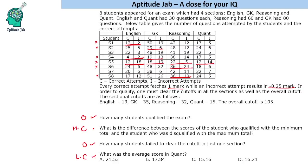In Quant, the cutoff is 15. One person will not clear the cutoff in Quant. Looking at the rest, these students are quite strong in Quant — except one, all have cleared the Quant cutoff. So we can easily say that only S3 and S7 qualified the examination.